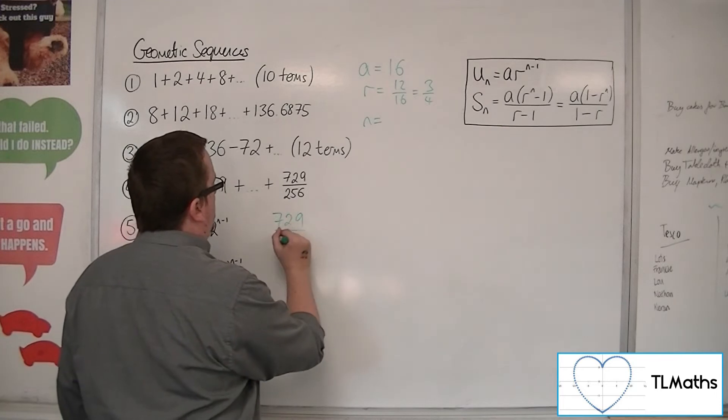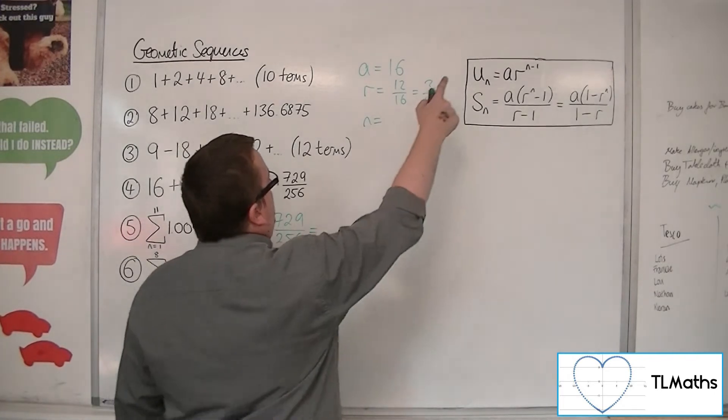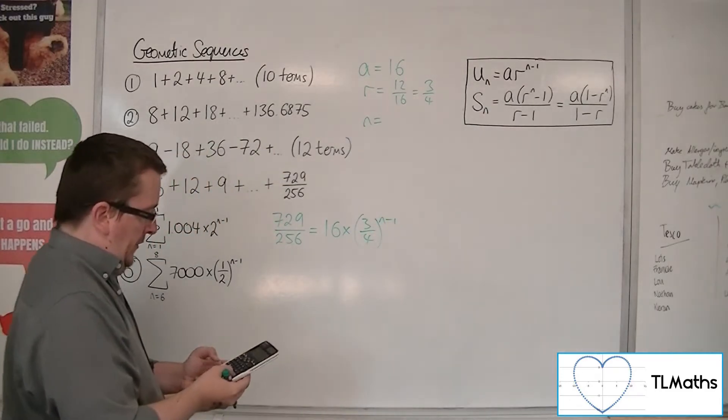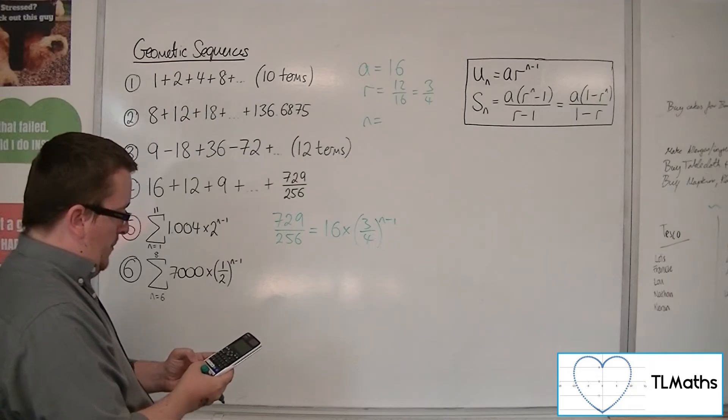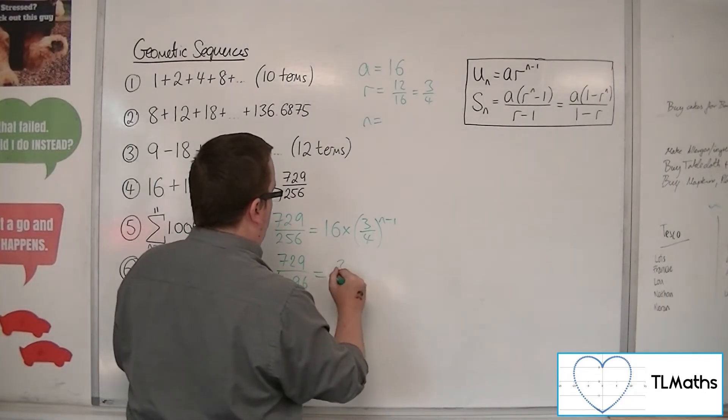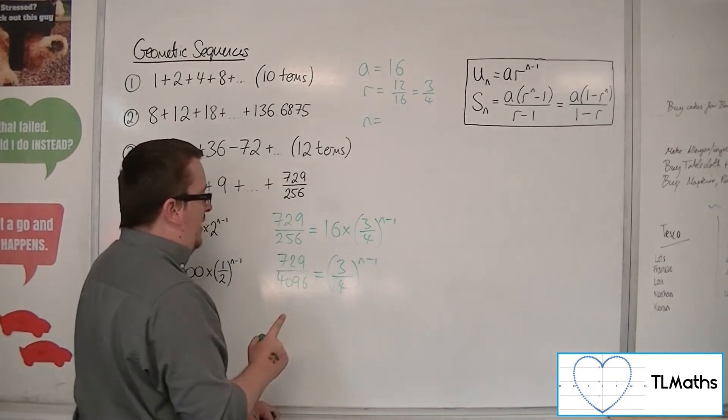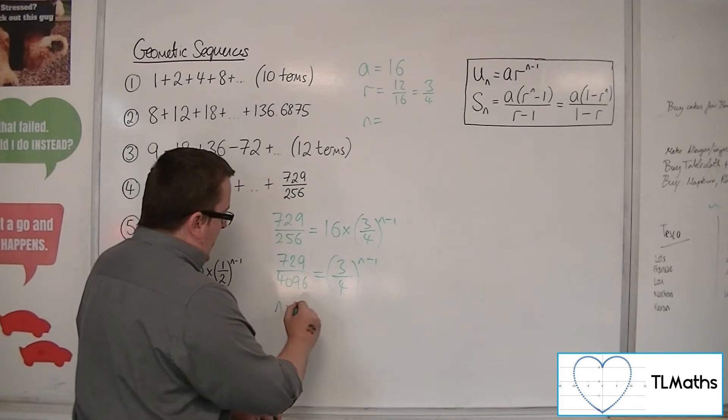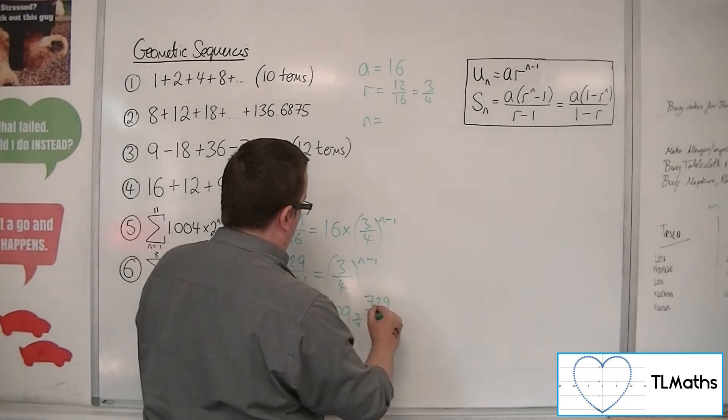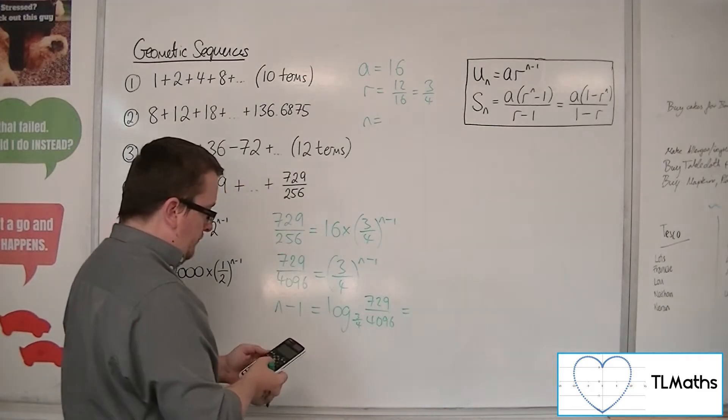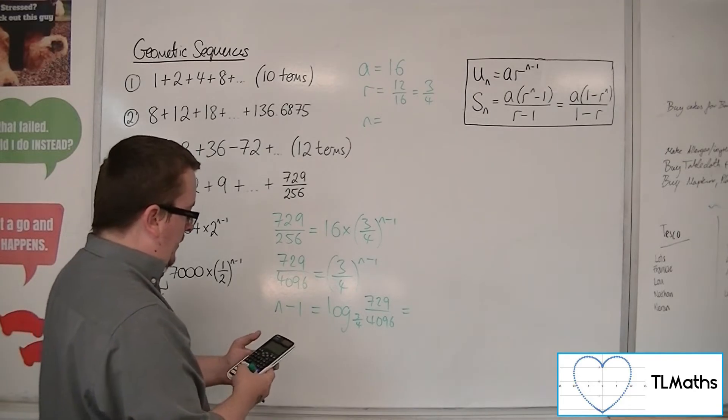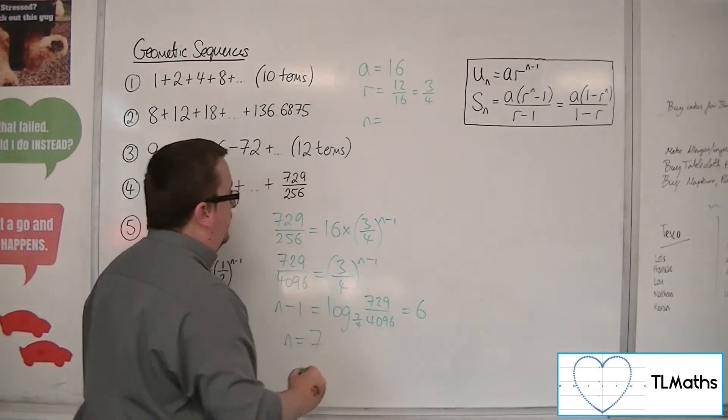So 729 over 256 must be equal to, using this formula up here, a times r to the n minus 1. So 729 over 256, divide that by 16 first, we get 729 over 4096, and that's 3 quarters to the power of n minus 1. Now you can log both sides, using log base 3 quarters, to get n minus 1, log base 3 quarters of the 729 over 4096. So log base 3 quarters of 729 over 4096 is 6. Add 1 to both sides, so n is 7.